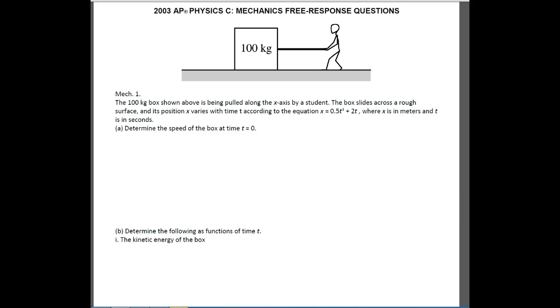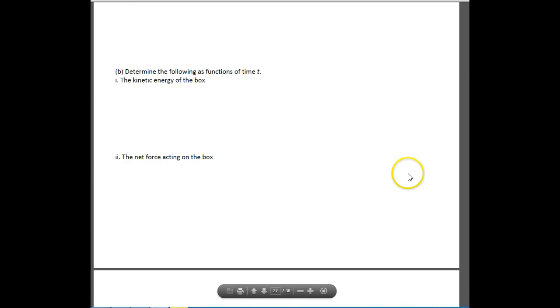For part 2, so letter B part double I, the next thing we have to do is find the net force acting on the box. And to find the net force, we're going to use our good friend Mr. Newton in his second law. And you remember that the net force is equal to mass times acceleration. The problem is we don't know what the acceleration is, but we do know that acceleration is equal to dv over dt.